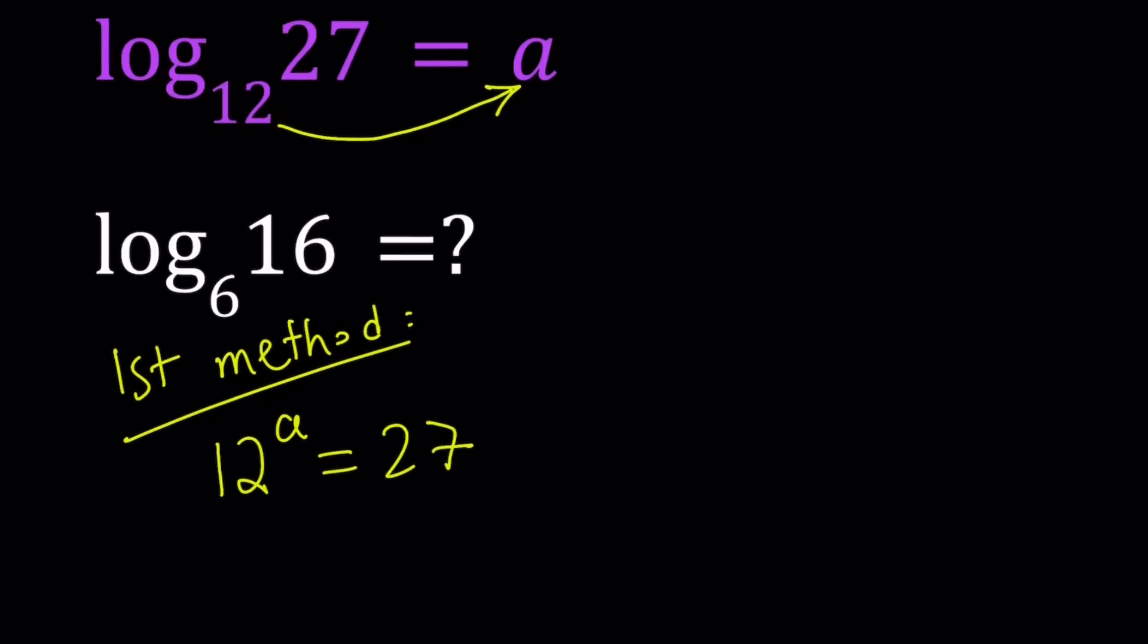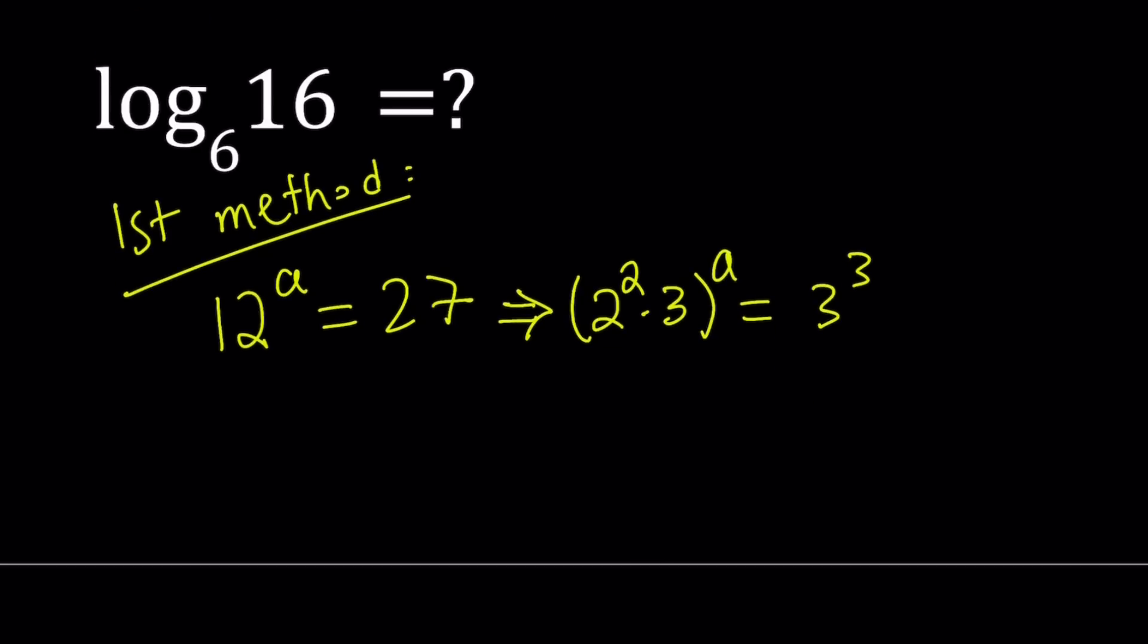12 to the power A equals 27, and 12 can be written as 2 to the second power times 3. So I'm doing the prime factorization on 12, and 27 can be written as 3 to the third power. So since A is a common power, we can write this as 2 to the power 2A multiply by 3 to the power A equals 3 to the third power. Now let's put the powers of 3 together. In other words, divide both sides by 3 to the power A. That's going to give us 2 to the power 2A equals 3 to the power 3 minus A, because we're dividing 3 to the third power by 3 to the power A. So we're supposed to subtract exponents.